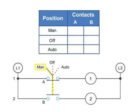Thus, in the MAN position, A is X or closed, and B is 0 or open. At the OFF position, both A and B are 0 or open.